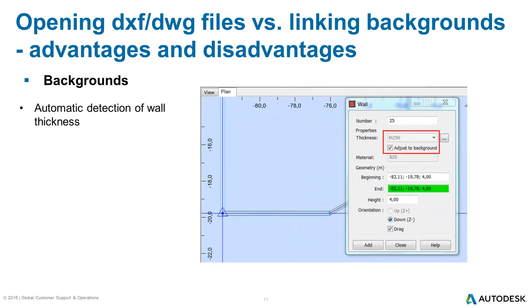In addition, when Adjust to Background is active, Robot can automatically detect the wall thickness and create a corresponding panel thickness label based on the distance of the parallel lines representing the wall on the imported background.